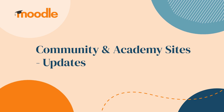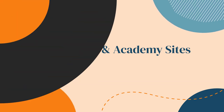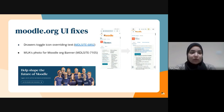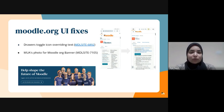This is Aya, from the community team. From Moodle.org this sprint, we had two fixes. One of them was the drawer toggle icon — it was overriding some text. This is now fixed on production.